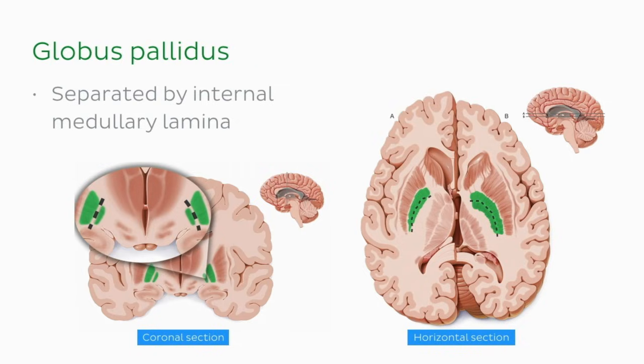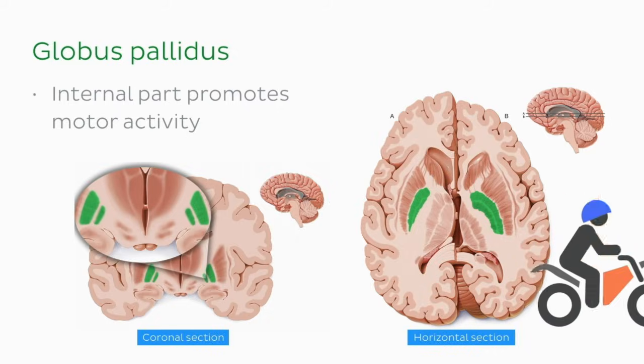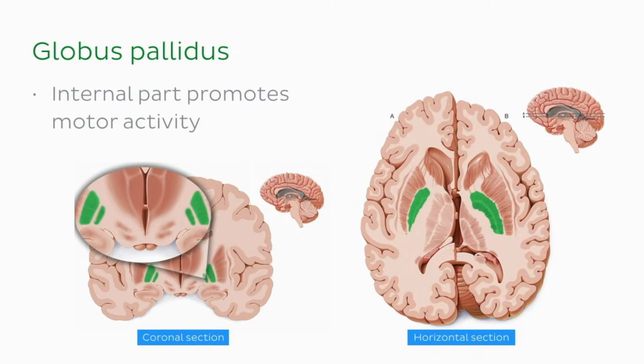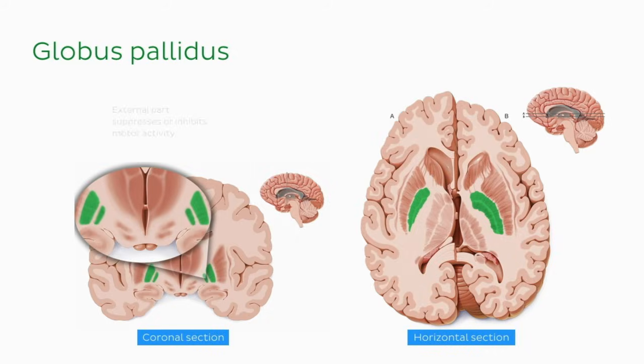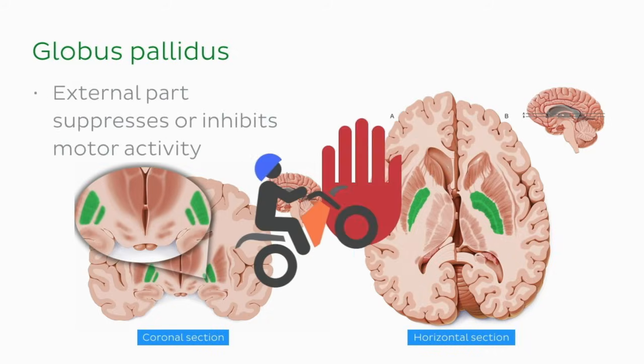Though they are right beside each other and have similar inputs, their functions are quite different due to the fact that the internal part promotes motor activity while the external part suppresses or inhibits motor activity.